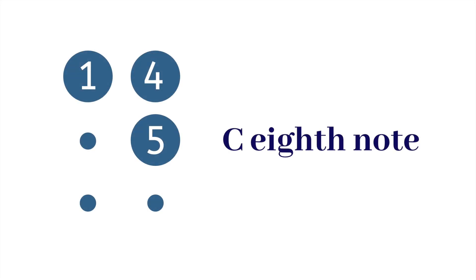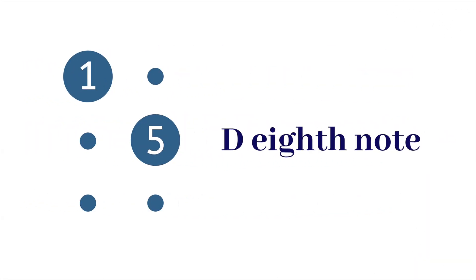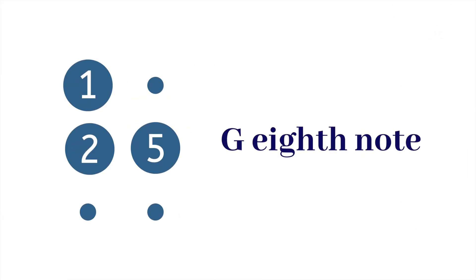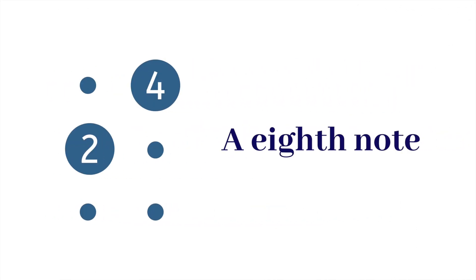If we do a C major scale: C is dots one, four, and five. D is dots one and five. E is dots one, two, and four. F is one, two, four, five. G is one, two, five. A is two, four. And B is two, four, five.